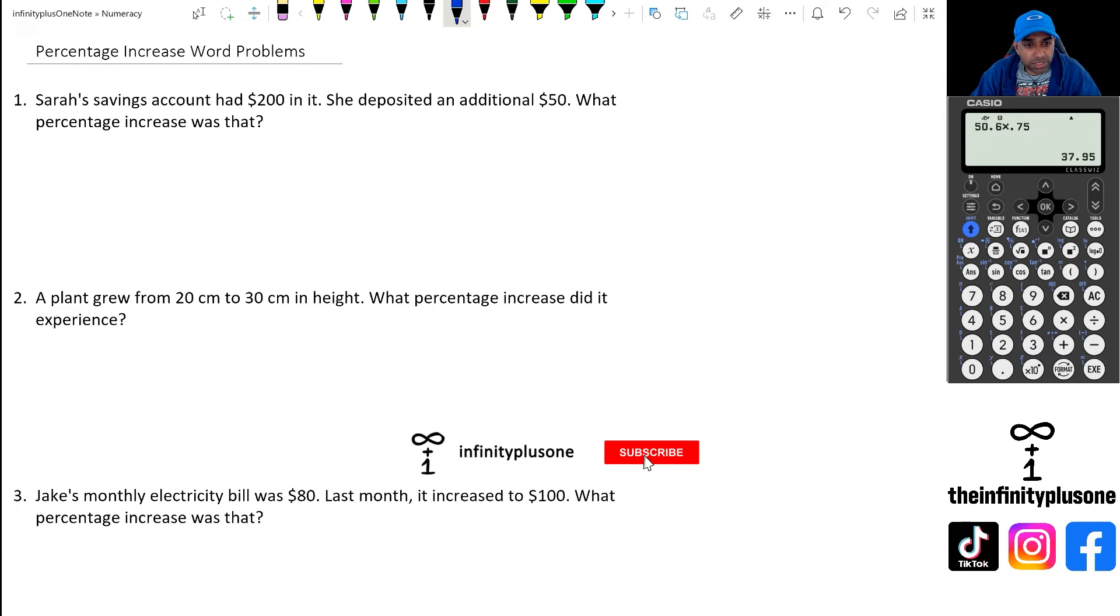Okay, so having a look at the first question, what we've got here is Sarah's savings account had $200 in it and she deposited an additional $50. What percentage increase was that?